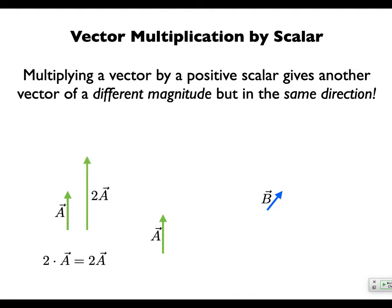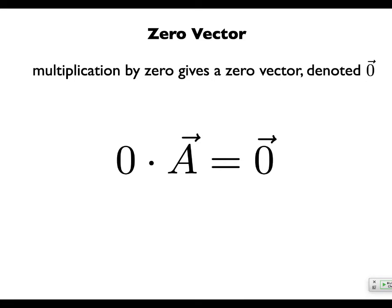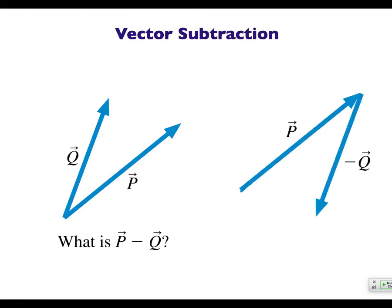If we have vector A and multiply it by two, it's just twice as long. Multiply by three — three times as long. Multiply a vector pointing in another direction by four — it's parallel to the original but four times as long. Same direction just means same angle from any reference point, which also means they're parallel. Multiplication by zero gives a zero vector. Subtraction is just like regular subtraction — it's addition with negatives. You multiply by negative one to flip the direction, then add normally.